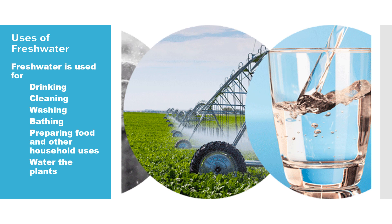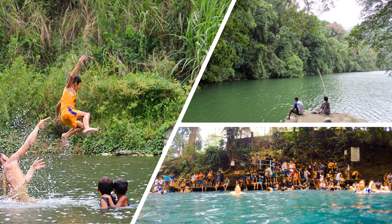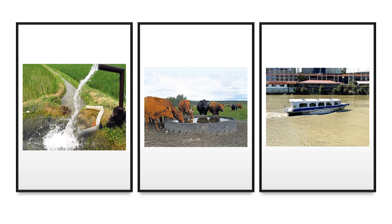Fresh water also sustains plant and animal life. It is used to water plants and given to animals to drink. Without water, plants will wither, and animals and people will die of thirst. Fresh water in rivers, lakes, and springs is used for recreation — one can go swimming or boating in these places. Clean rivers and lakes are also a rich source of shrimps, crabs, and shellfish. Rivers and lakes whose water is not very clean may still be useful — they can serve as routes for transportation for boats.